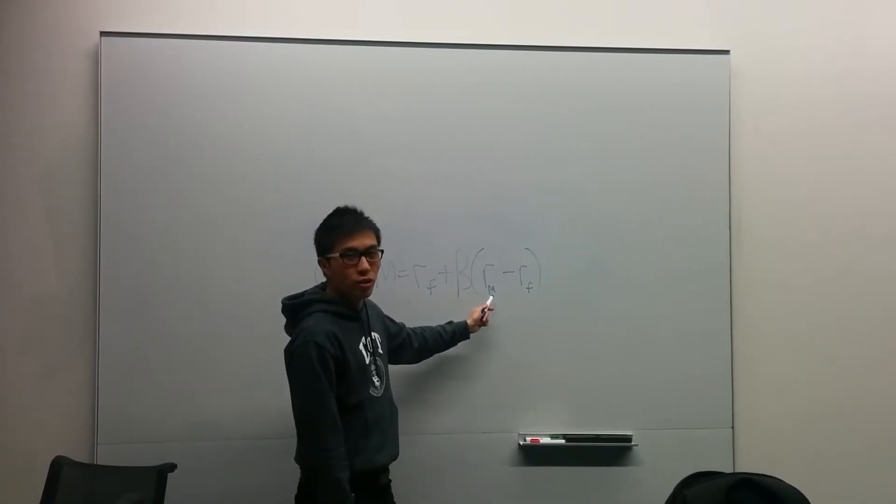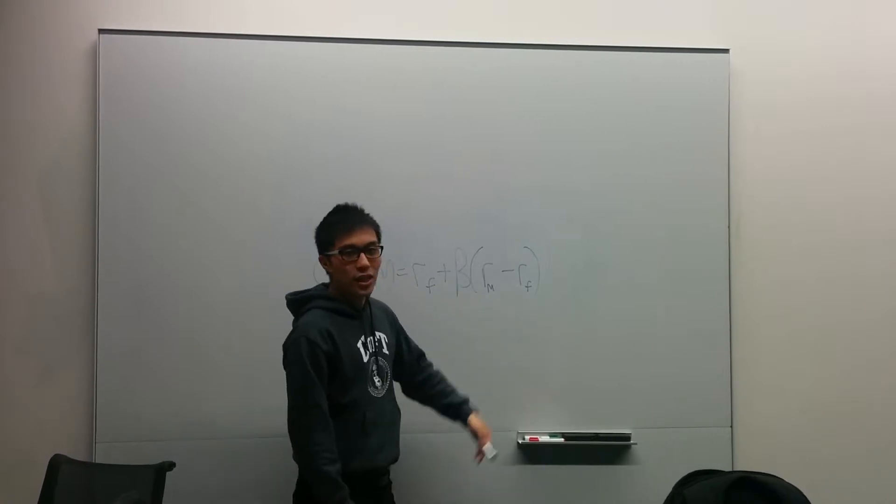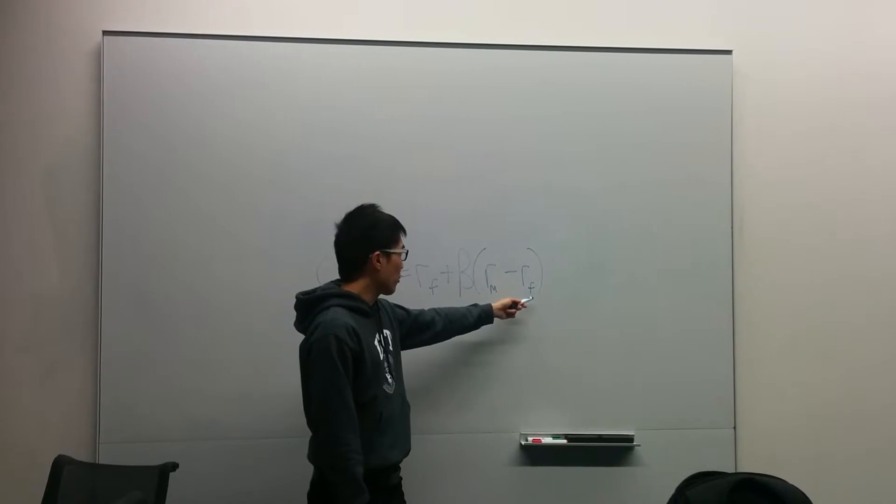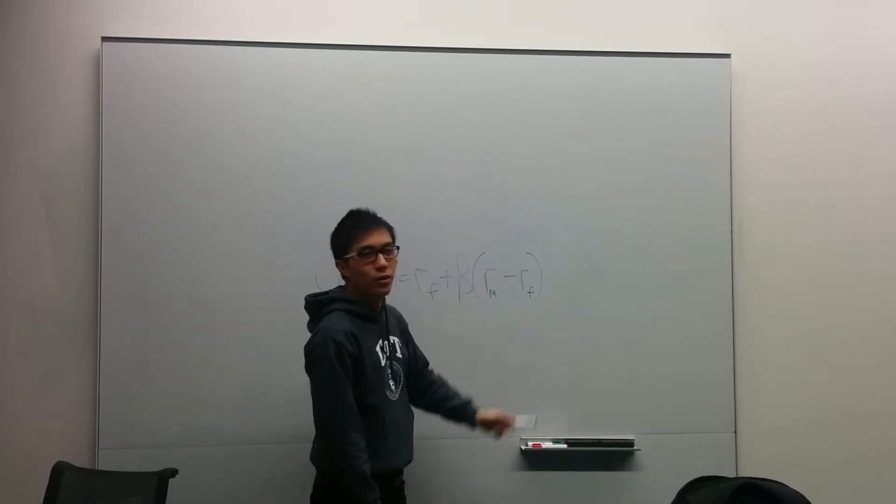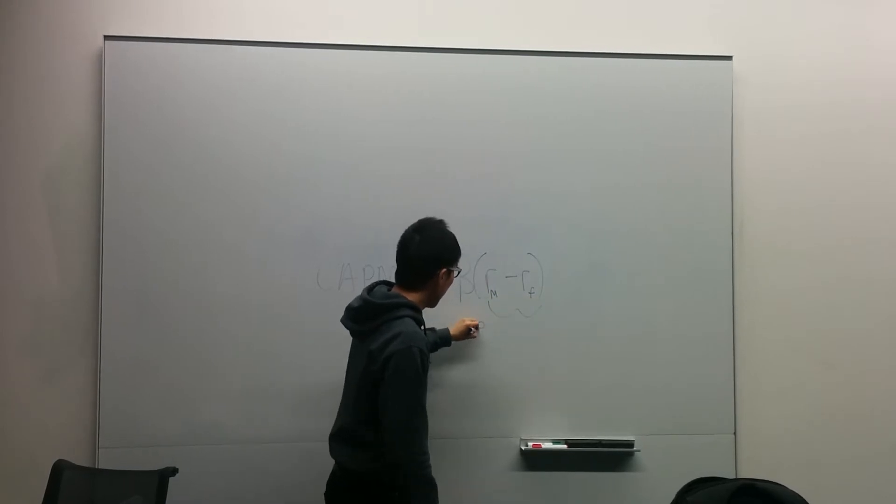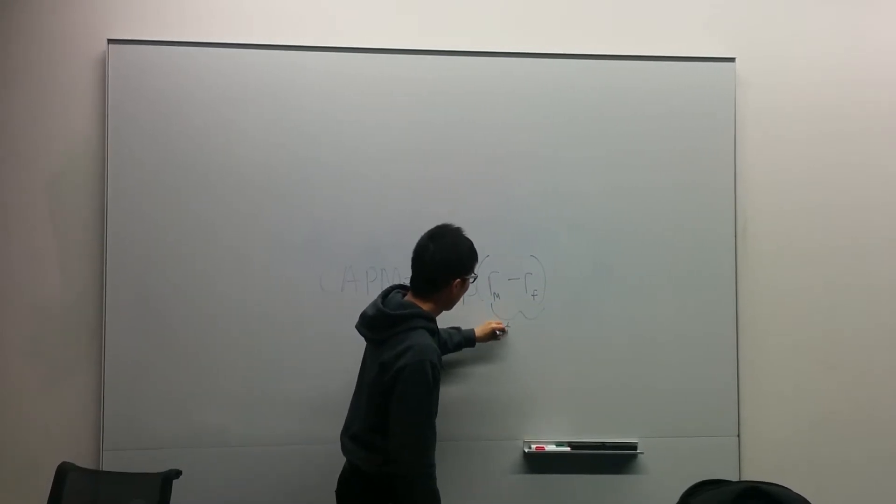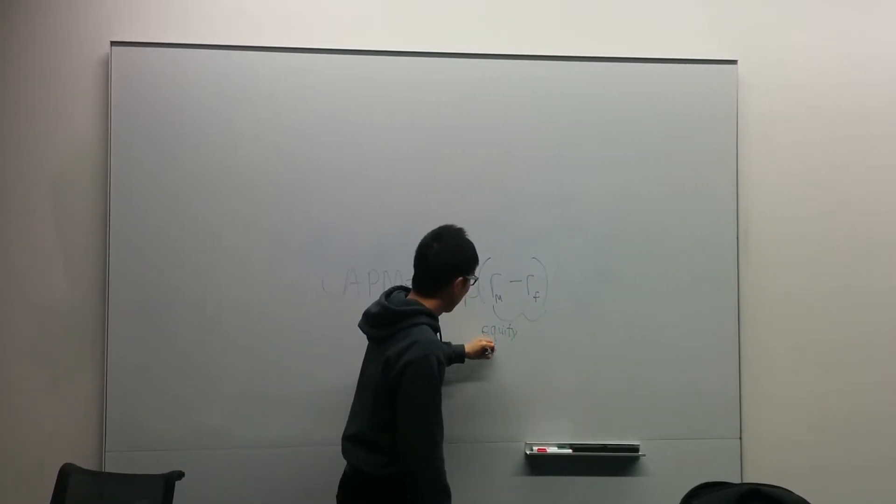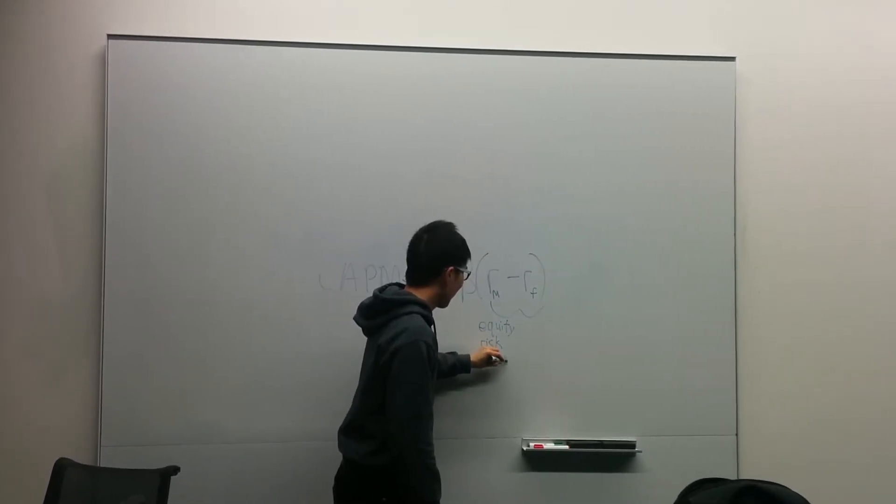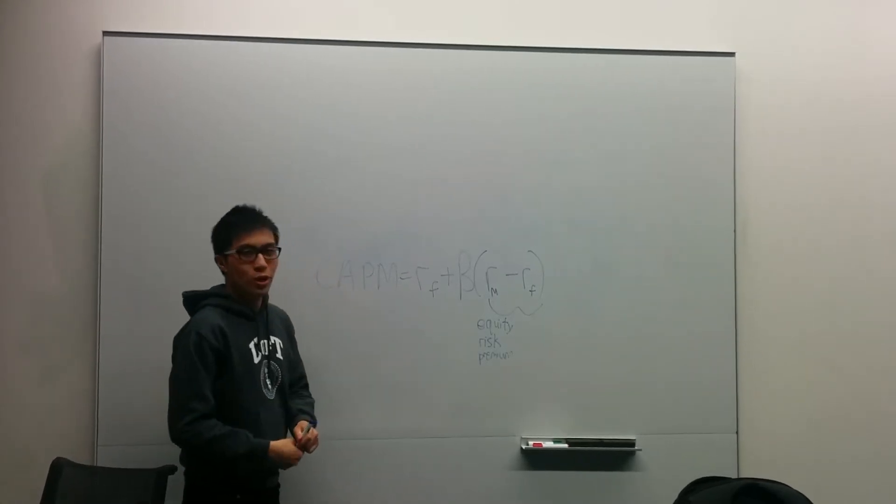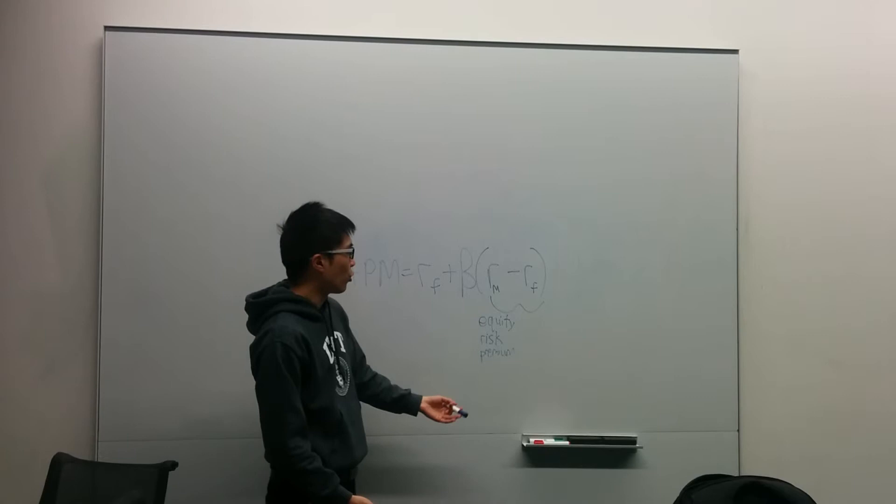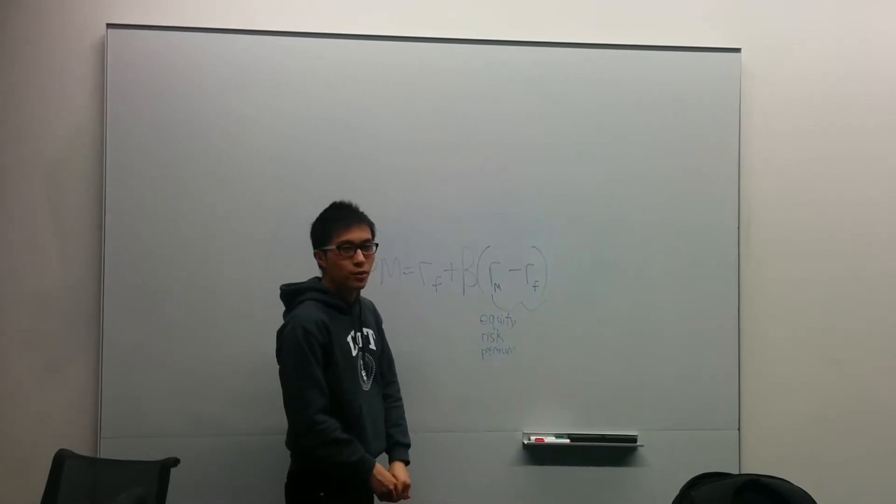And then this is the return to the market portfolio. So essentially it's like as a market overall how much is the market returning? And then it's like the risk-free rate again. So this difference is known as the equity risk premium. It represents when you invest in an equity market how much interest you can really demand in order to hold the market portfolio over the risk-free rate.